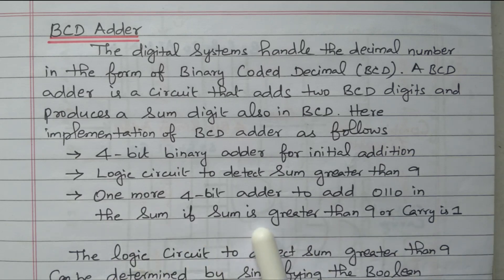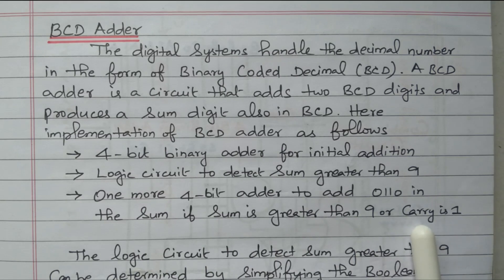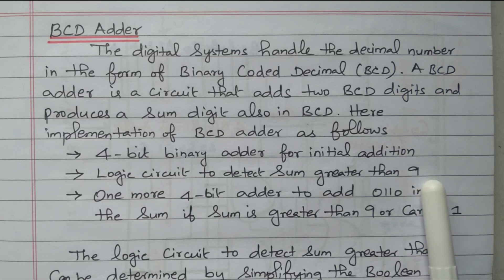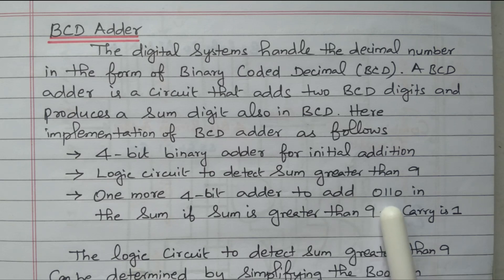If the sum is greater than nine or carry is one, from zero to nine it is not a problem — simply it is represented by four digits. For greater than ten, we need to add the decimal equivalent of six: 0, 1, 1, 0, in order to bring back into the correct BCD value.